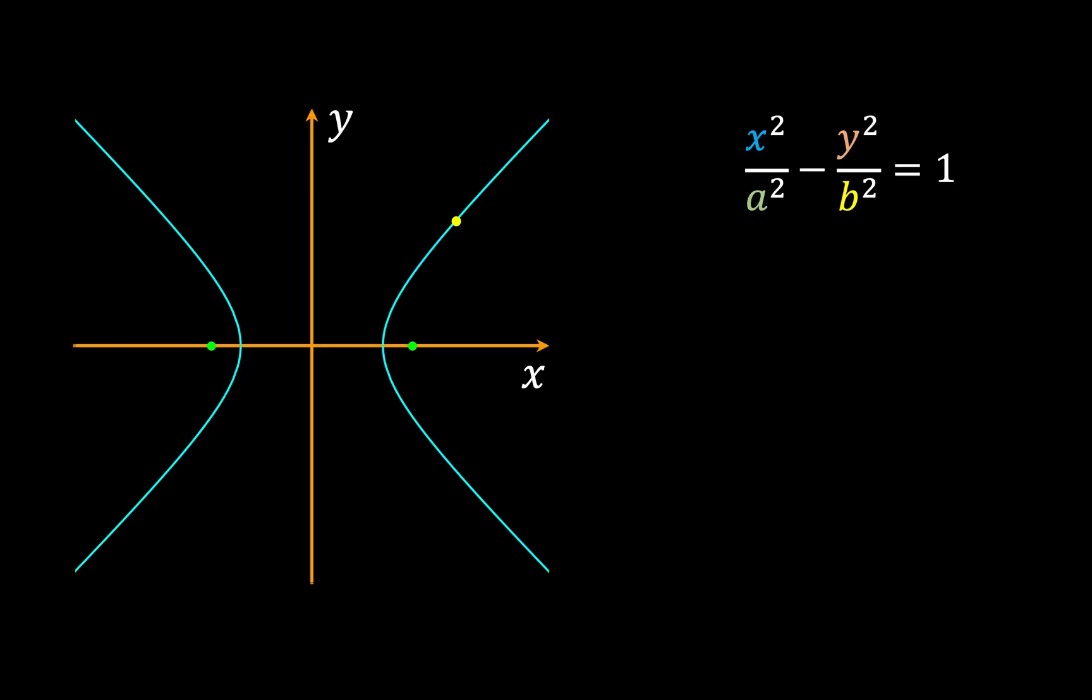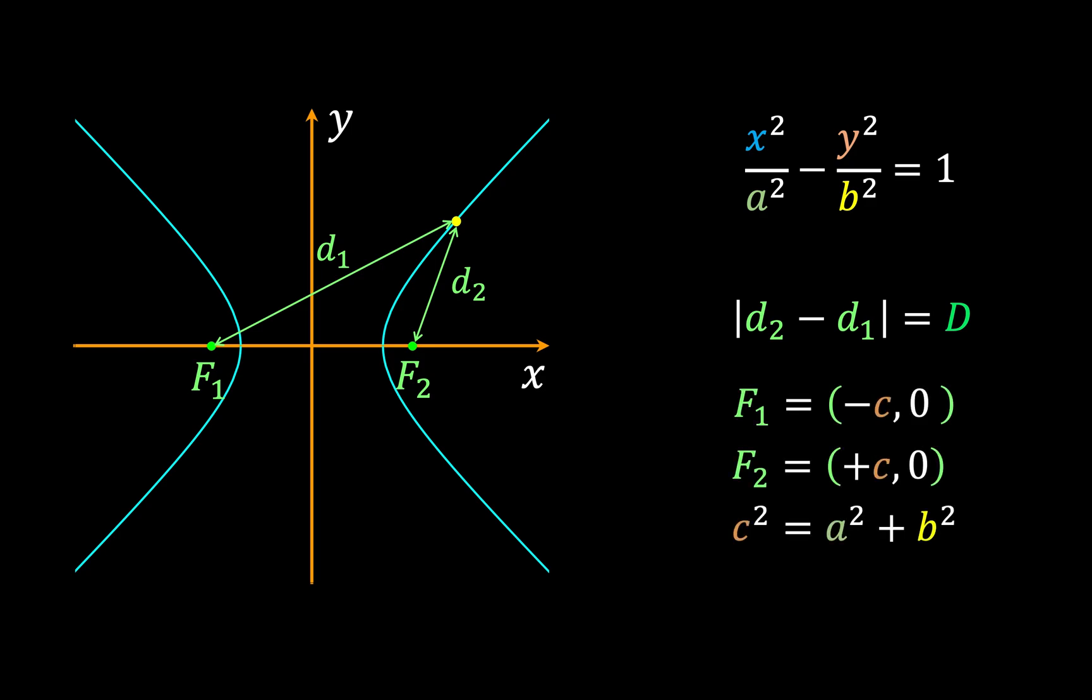Now as a brief refresher on hyperbolas, a hyperbolic curve is simply a set of points whose distances to two foci maintain the same absolute difference. Now I won't prove any of this here, but these foci are related to constants a and b by this equation, and then these constants also define a rectangle whose corners enable us to draw the asymptotes of the hyperbola, denoted by the red lines here.